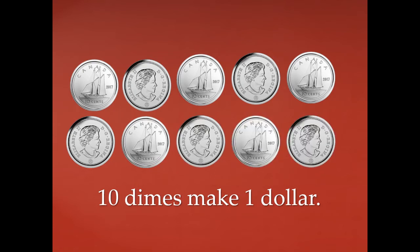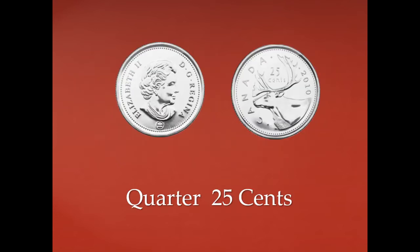One hundred! It takes ten dimes to make one dollar because there are one hundred cents in a dollar. This is a quarter. A quarter is worth 25 cents. On the head side of the quarter we have a picture of Queen Elizabeth the Second, and on the tail side we have a picture of a caribou.